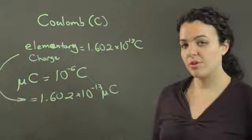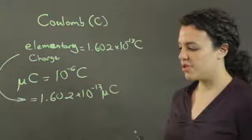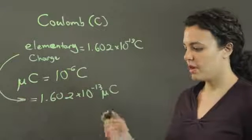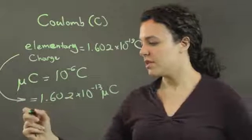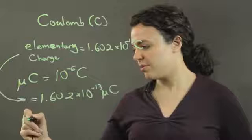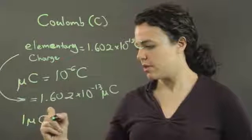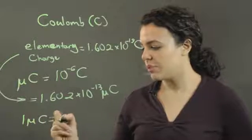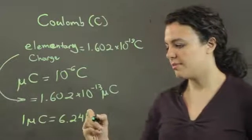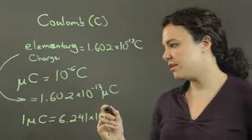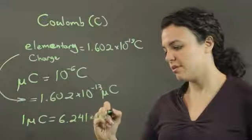If you want to go from microcoulombs to elementary charge, then 1 microcoulomb is equal to 6.241 times 10 to the 12th.